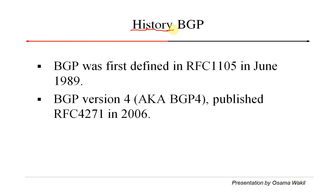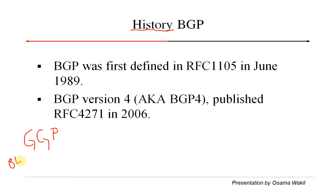Now the history of BGP — BGP is a very interesting protocol and it has some interesting history as well. It all started back in 1982 with a protocol named Gateway to Gateway Protocol (GGP). This was initially used to communicate between AS numbers. It didn't have many metrics; it used the entire AS number as one hop, similar to RIP, with no attributes or other metrics.